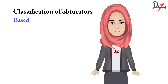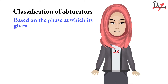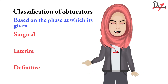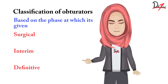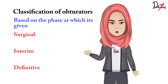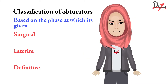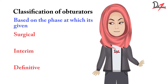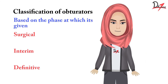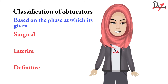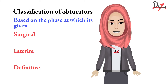Depending on the phase during which an obturator is given, it can be of three types: surgical obturator, interim obturator, and definitive obturator. The surgical obturator is given immediately after surgery, or up to one week after surgery, depending on the type of tumor and the services available. The interim obturator is usually given three to four weeks after surgery.